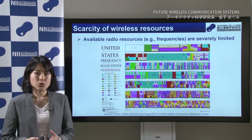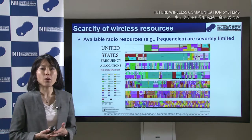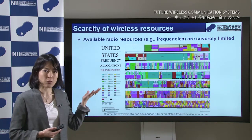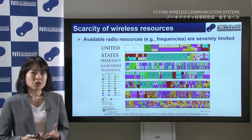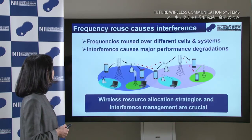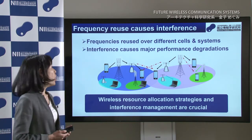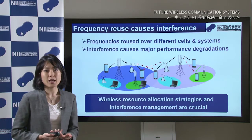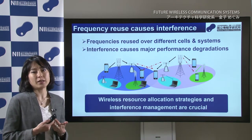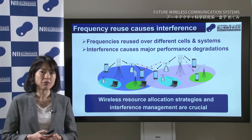One of the major issues of such wireless systems is the scarcity of the wireless resource, because in order to perform wireless communications, we need to use some radio resources, which are, for instance, the radio spectrum frequencies. The problem is that such frequencies are very limited, as can be seen here in the case of the United States. Because of this spectrum scarcity, the frequencies need to be reused over different cells, over different systems, and this creates interference. Interference is a cause of major performance degradation when we communicate. So the wireless resource allocation strategies and interference management will be very crucial.